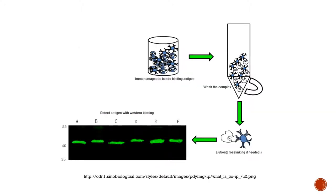Here is another illustration of Co-IP. This is included so you can see how the antigens are detected with Western blotting. You can see this in the bottom left.